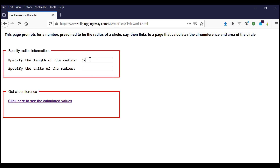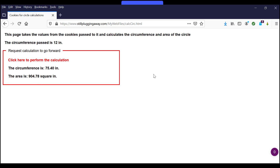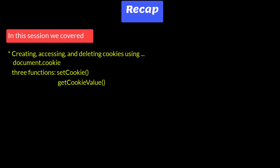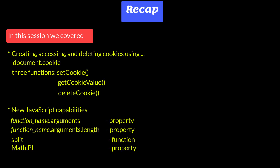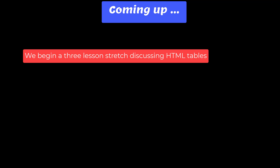In this session we covered creating, accessing, and deleting cookies using document.cookie and three functions: setCookie, getCookieValue, deleteCookie. We looked at new JavaScript capabilities: the functionName.arguments property, functionName.arguments.length property, the split function, Math.PI property, and the toFixed method, using cookies to pass data among pages and passing cookie values to CGIs. Coming up, we begin a three-lesson stretch discussing HTML tables.